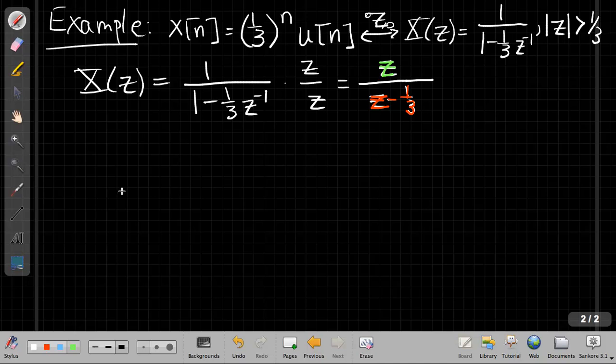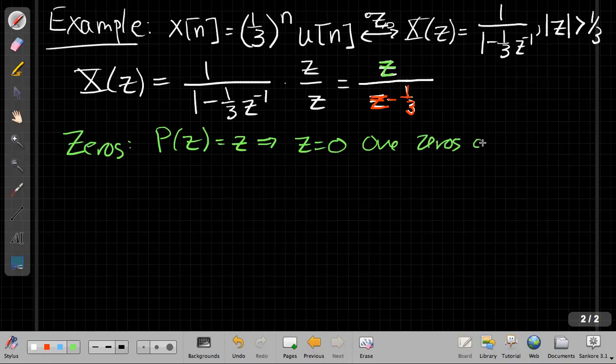Now we're going to find the poles and zeros. For the zeros, our polynomial for the numerator is just Z. Where is the root of this? Z equals zero. So we have one zero at Z equals zero.